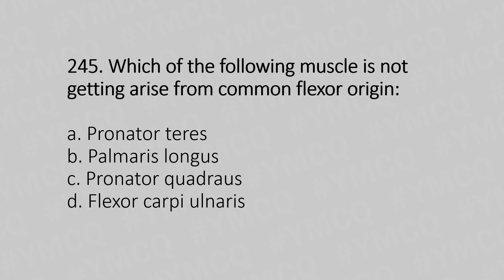Question 245: Which of the following muscles does not arise from the common flexor origin? Option A: pronator teres. Option B: palmaris longus. Option C: pronator quadratus. Option D: flexor carpi ulnaris. The answer is Option B, palmaris longus.